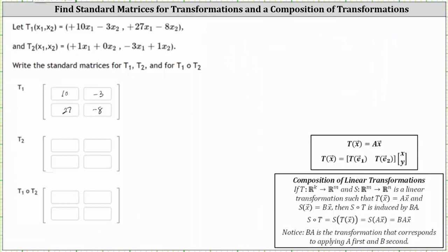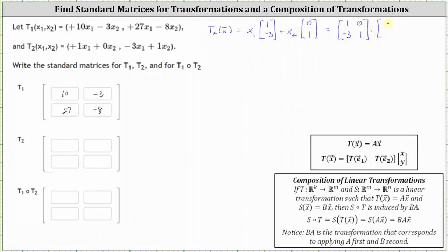Now let's find the standard matrix for T2, and again we'll show both methods. T2 of X equals X1 times the two-by-one matrix [1, negative 3] plus X2 times [0, 1]. We can write the sum of these products as a two-by-two matrix with first column [1, negative 3] and second column [0, 1], times vector X = [X1, X2]. We now have T2 in the form of matrix A times vector X, where matrix A is the standard matrix.